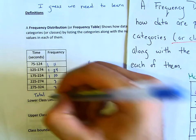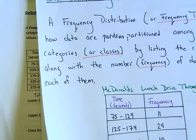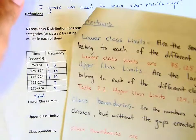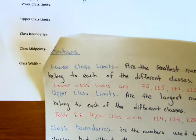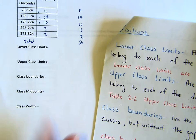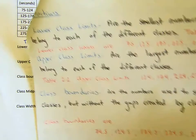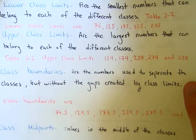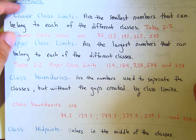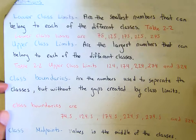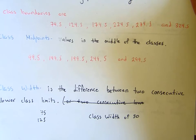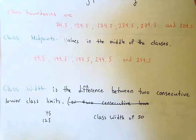For the next part, here are some basic definitions within a frequency distribution that are good to have in your notes: the lower class limit, upper class limit, class boundaries, class midpoints, and class width. Here are the definitions — pause the video and copy them down into your notes.